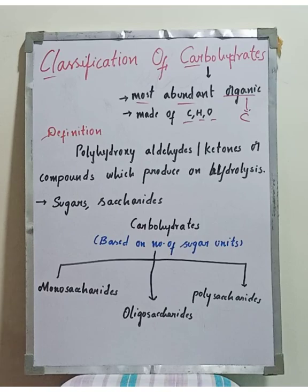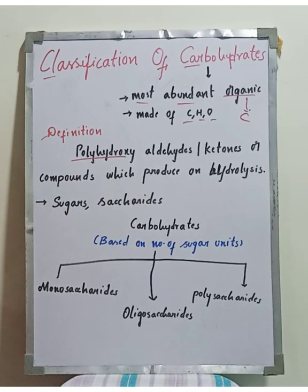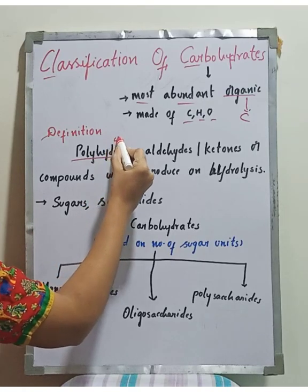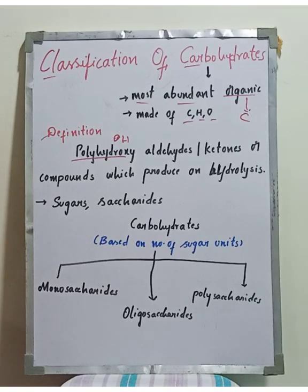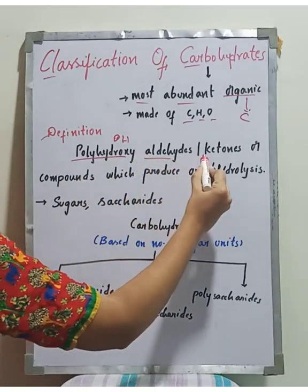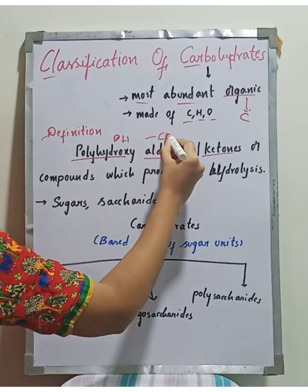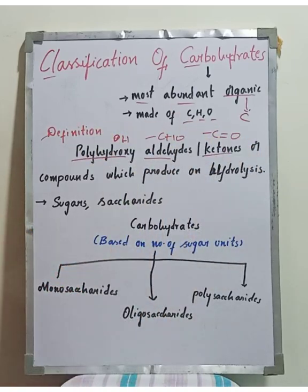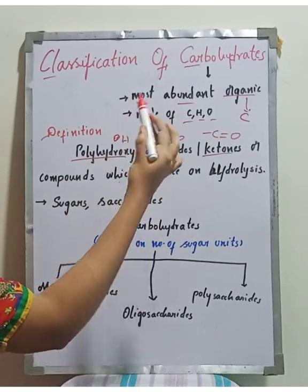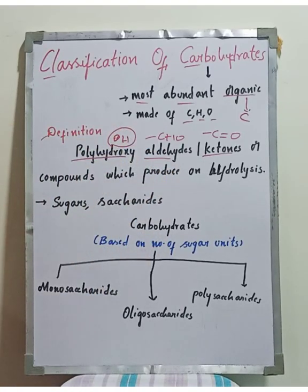The definition of carbohydrates: these are polyhydroxy compounds — poly meaning many, and hydroxy meaning OH groups — that are aldehydes or ketones. Aldehydes contain a CHO group and ketones contain a C=O group. Compounds with high amounts of hydroxy groups are carbohydrates.